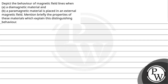Let's read the question: depict the behavior of magnetic field lines when, firstly, a diamagnetic material and, secondly, a paramagnetic material is placed in an external magnetic field. Mention briefly the properties of these materials which explain this distinguishing behavior.